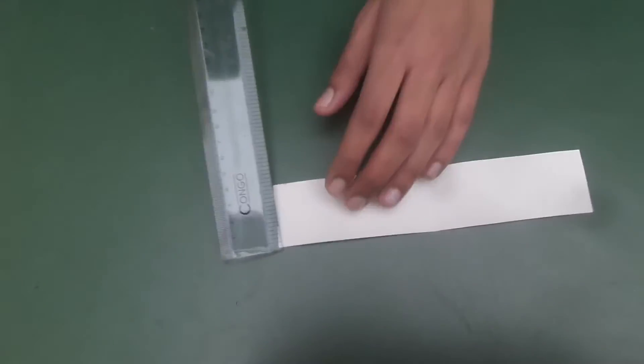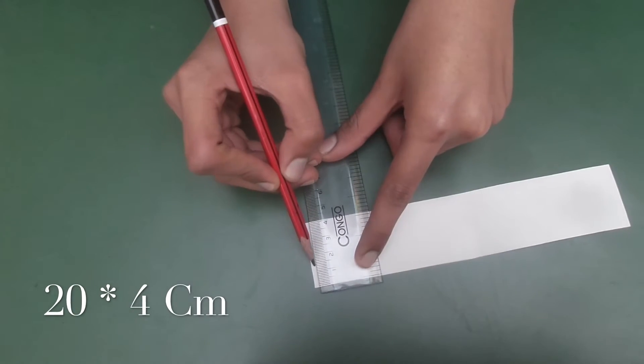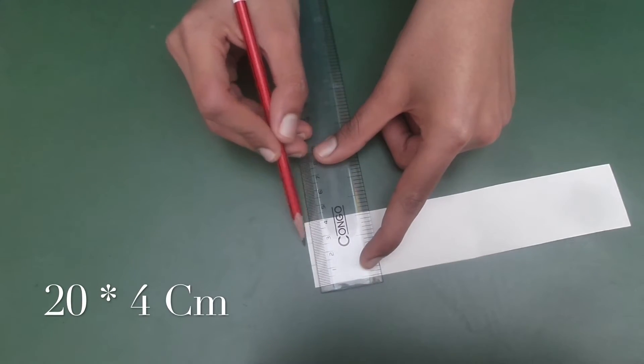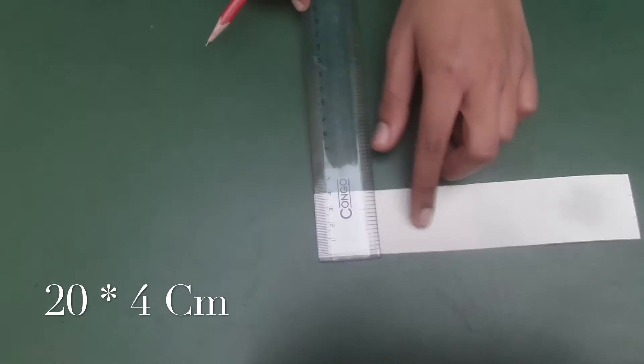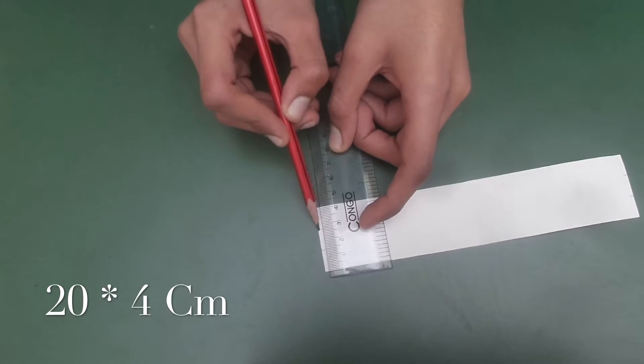I'm taking a designed chart of 20 centimeters of length and 4 centimeters of width. Now I'm dividing this 4 centimeter width into three parts: 1.4, 1.2, and 1.4 again. You have to make these markings at both sides of the strip.